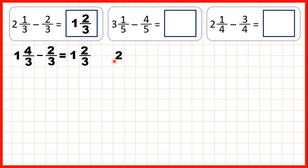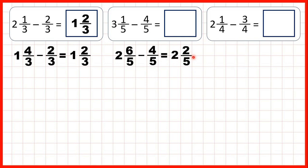So we need to exchange one of our wholes for five more fifths. One less than three is two, and that means we have five more fifths, so we can add the denominator to the numerator. Five plus one is six, so two and six-fifths is the same as three and one-fifth, but now we can take four-fifths away. Two minus nothing is two, and six-fifths minus four-fifths is two-fifths, so our answer is two and two-fifths.